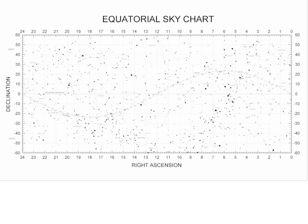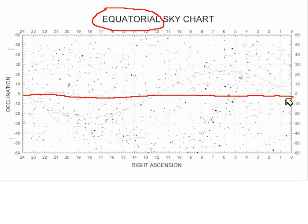If we cut open the celestial sphere, we get a sky chart centered on the equator — an equatorial sky chart. The equator is the line at zero degrees running all the way across the chart. We also see the ecliptic, which snakes high and low around the equator because the Earth is tilted 23.5 degrees. So we can now see the measurements of declination and the measurements of right ascension.